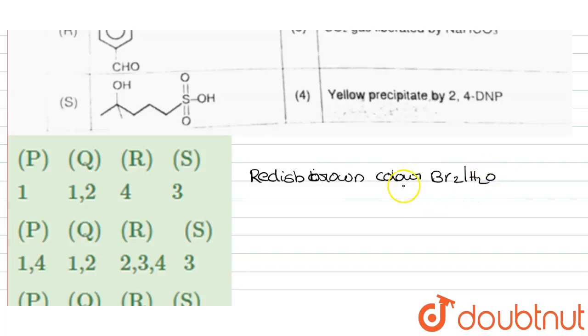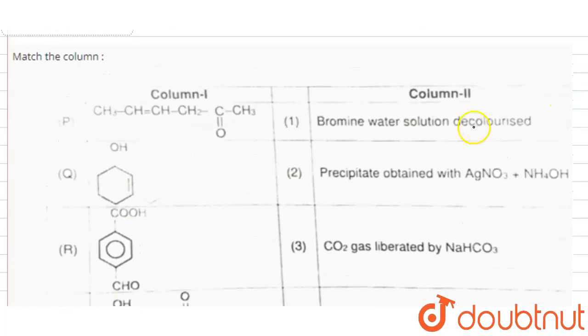That is C-C-Br-Br. This will decolorize the reddish brown color of bromine water. So this is the positive test for alkene groups.